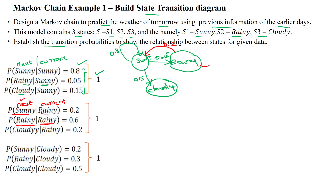The probability that tomorrow will also be rainy given today is rainy is 0.6. The probability that tomorrow will be cloudy given today is rainy is 0.2. So from rainy to cloudy the probability is 0.2.